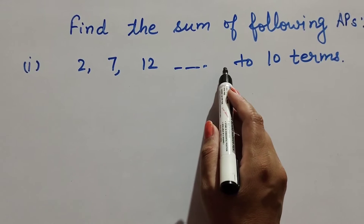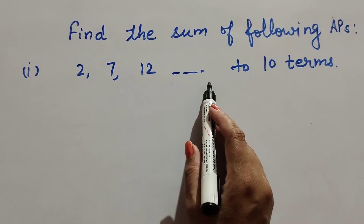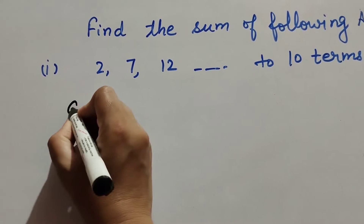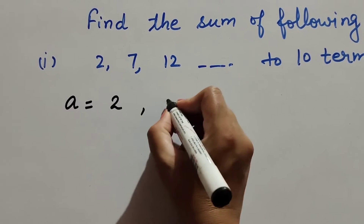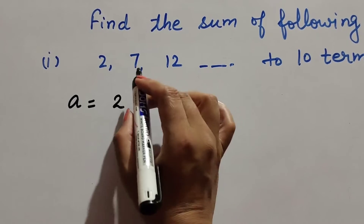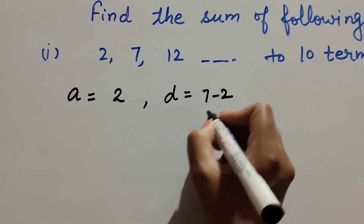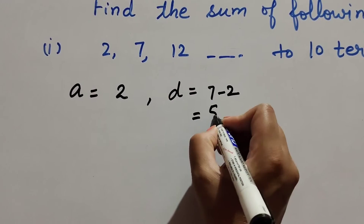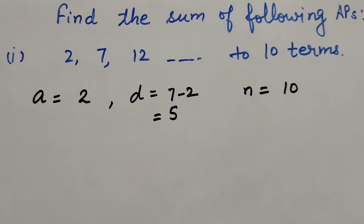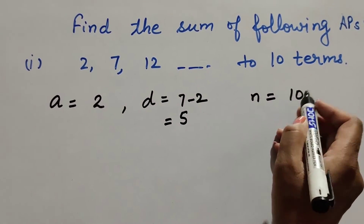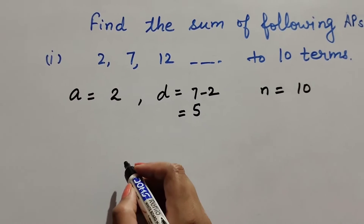The series is 2, 7, 12, and so on up to 10 terms. In this, the given first term a is equal to 2, common difference d is equal to second term minus first term — that is 7 minus 2 equal to 5 — and total number of terms n is given as 10.